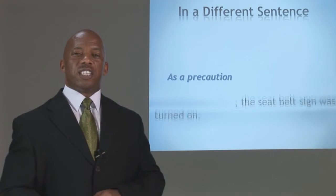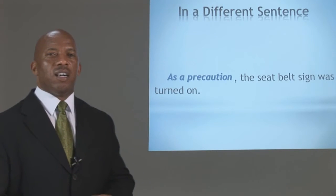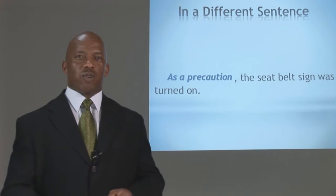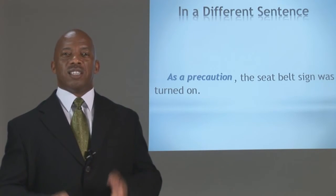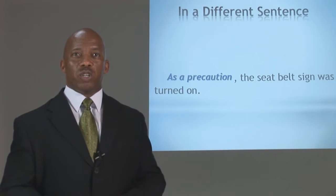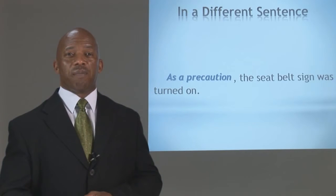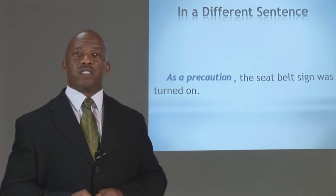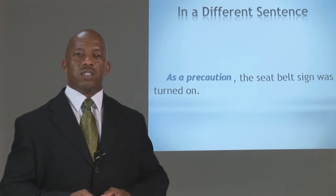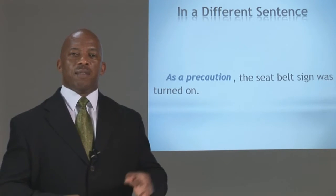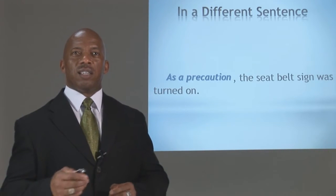In a different sentence: as a precaution, the seatbelt sign was turned on. Of course, this could be for many reasons — landing, taking off, turbulence. As a precaution, the seatbelt sign was turned on. As an additional safety measure, for your protection — the other literal meanings could be used in this sentence. For your protection, as a safety measure, the seatbelt sign was turned on.